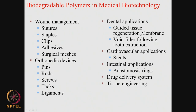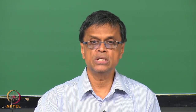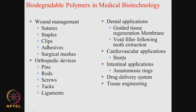In the dental area, guided tissue regeneration membranes and void filling are needed. After a tooth extraction, we fill the void and want the material to slowly allow natural tissue growth, so degradation is desired. For cardiovascular applications, stents — currently metal stents and drug-eluting stents — are widely used. Ideally, we would like the stent to degrade after a few months so there is no titanium or stainless steel remaining inside. If the stent does not degrade, the doctor cannot place another stent, and stent migration may block an artery.